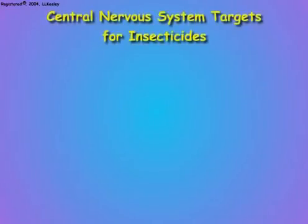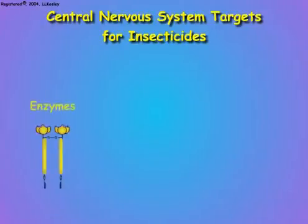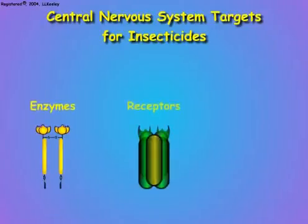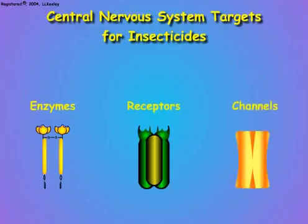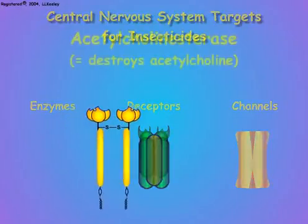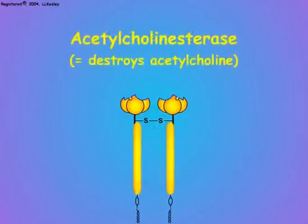Insecticide resistance occurs from genetic mutations that often result in slight changes in the molecular structures of the enzymes, receptors, or channels that are the targets for insecticides in the insect nervous system. To illustrate this, we will use the enzyme acetylcholinesterase as our model.